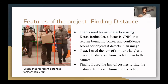My project does this in three steps. The first step is finding the distances between people. I perform human detection using Keras's RetinaNet, a faster RCNN that returns bounding boxes and confidence scores for objects it detects in an image. I needed to grab each of the humans in the videos from every single frame. Next, I used the law of similar triangles to detect the distances from each human to the camera. Finally, I used the law of cosines to find the distance from each human to the other.